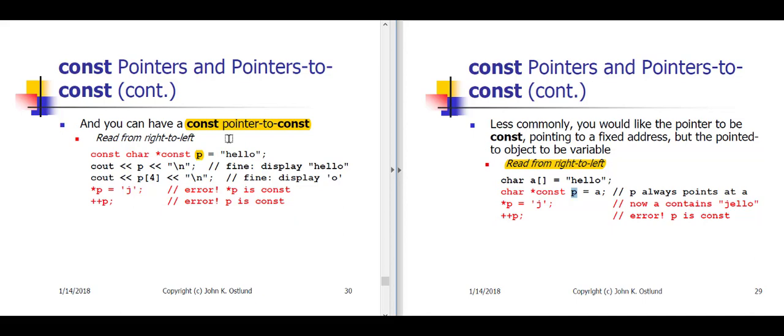We've initialized P with the address of the little h in the string literal hello. If we access P in the Cout statement, since P is pointing at a char, we know that that ends up displaying a C-style string, so that will display the characters H-E-L-L-O.